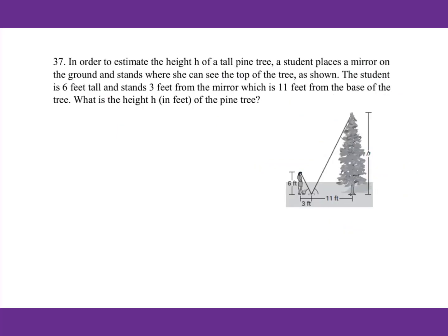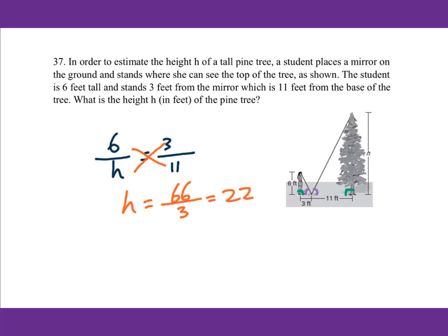For number 37, since the corresponding angles are equal to each other, these two triangles are similar. The ratio of corresponding sides is equal. Therefore, 6 over H equals 3 over 11. Cross multiply: H equals 66 over 3, which equals 22 feet.